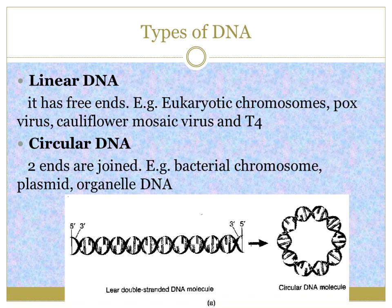Types of DNA — there are two types based on their free ends. If the ends are free it is called linear DNA, seen in eukaryotic chromosomes, poxvirus, cauliflower mosaic virus, T4 bacteriophage, etc. If the two ends are joined with no free ends, it is circular DNA — seen in bacterial chromosomes, plasmids, and organelle DNA such as mitochondrial or chloroplast DNA.